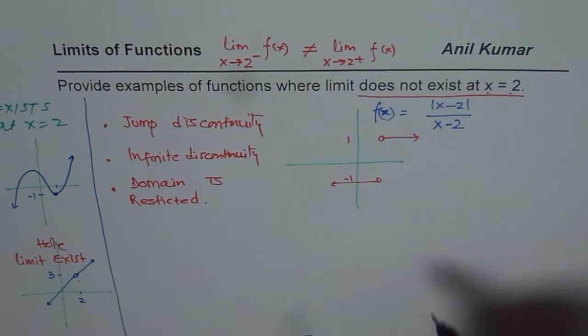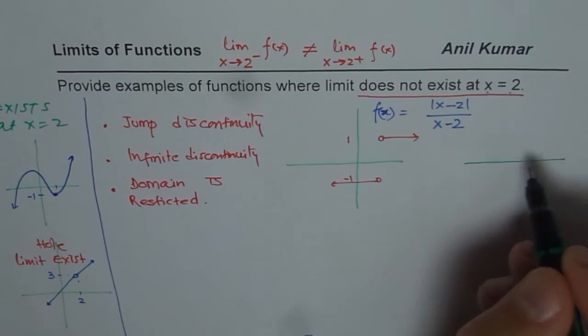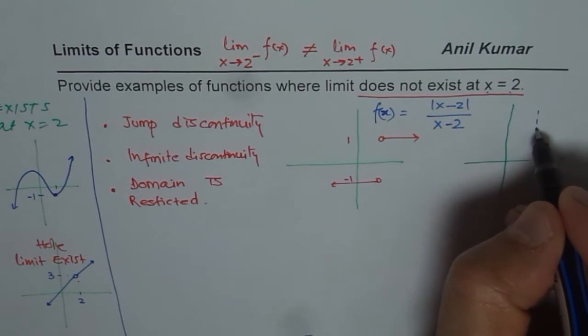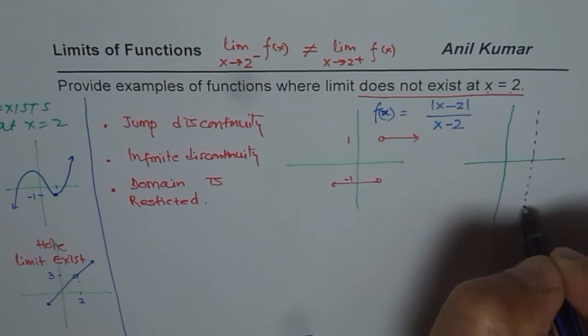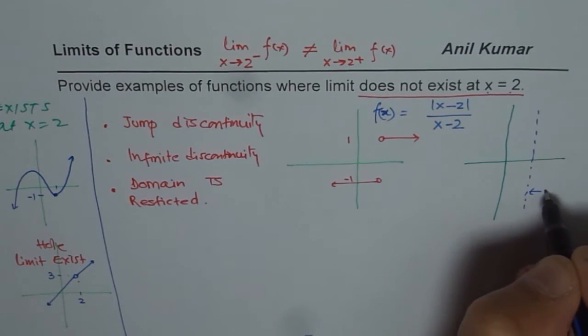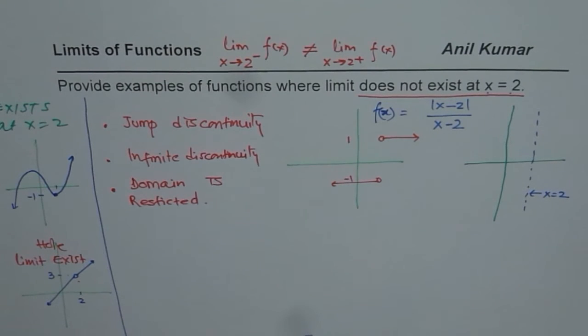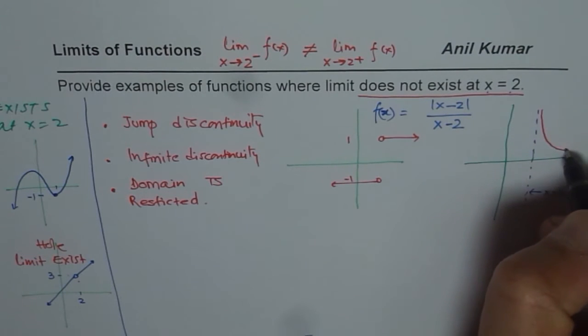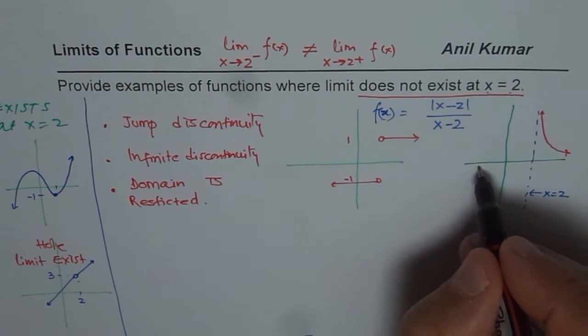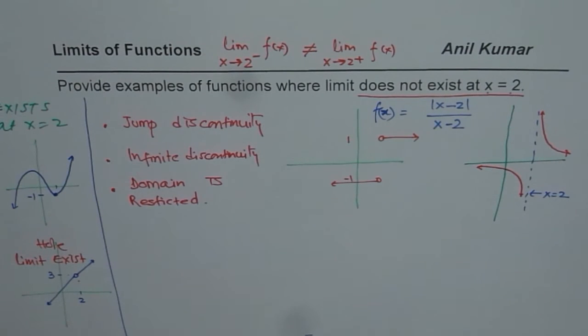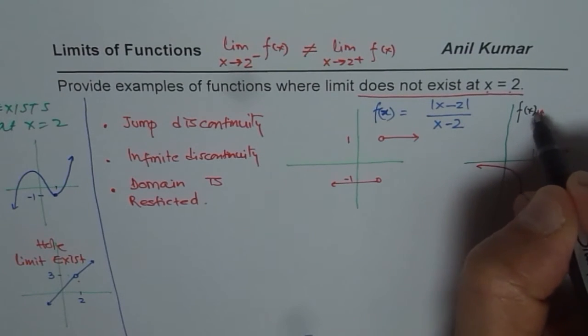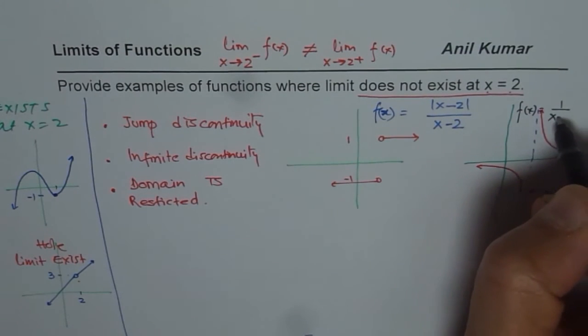For infinite discontinuity, a good example could be the reciprocal function. Let me sketch one here. There is a vertical asymptote at x equals to 2, and the function could be like this. These figures will help you understand why these are good cases to take. The function which we are talking about is f of x equals to 1 over x minus 2.